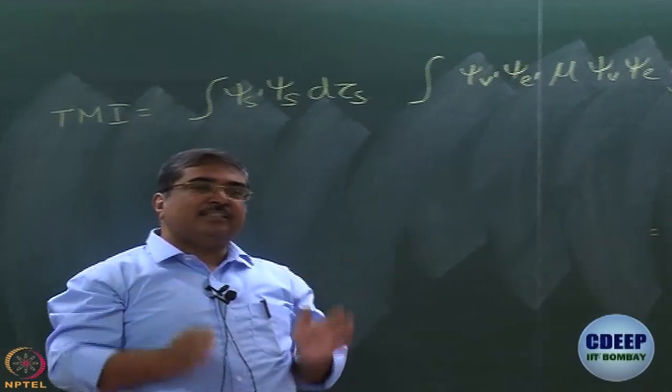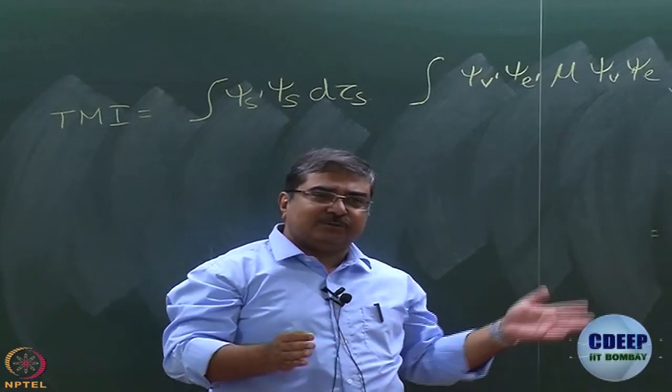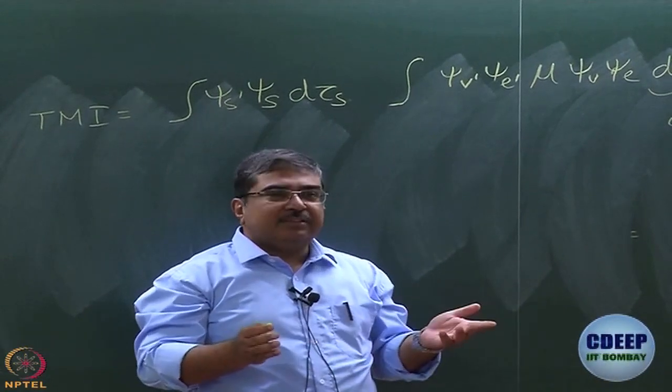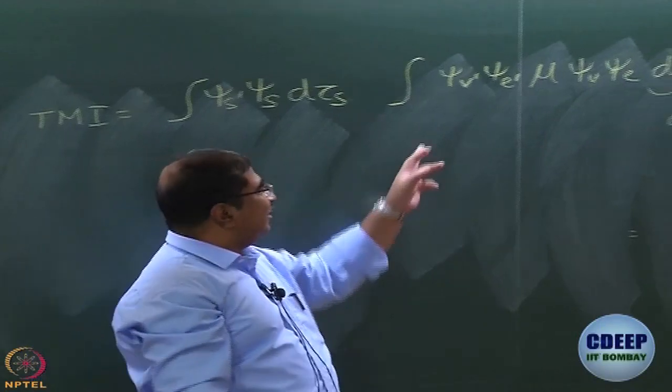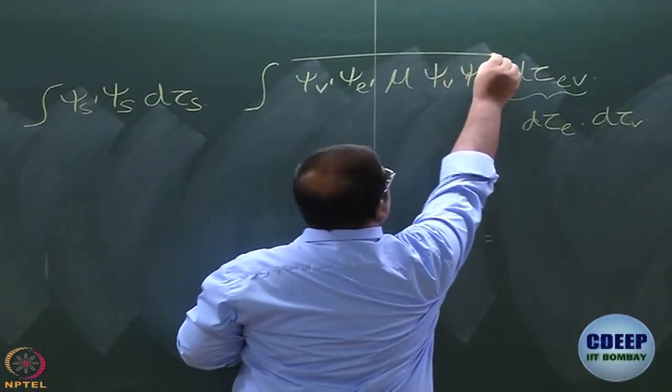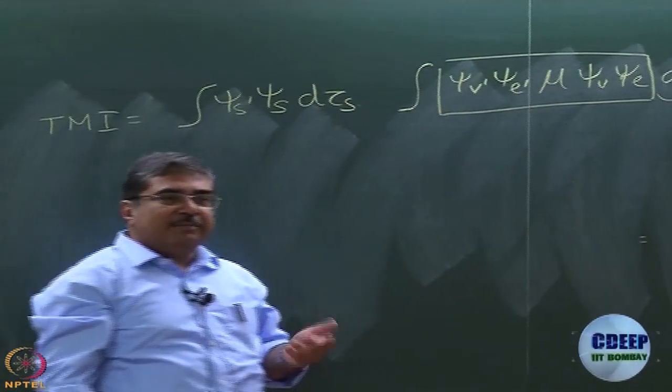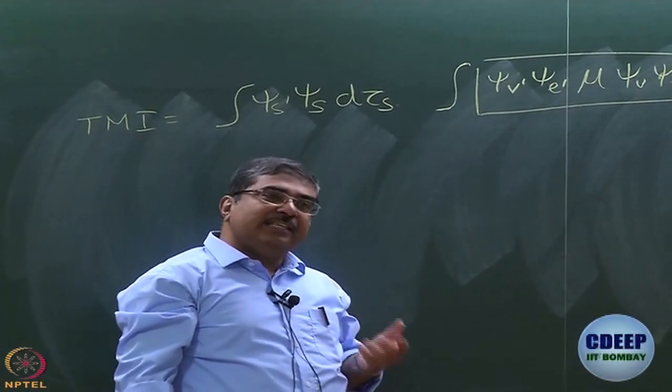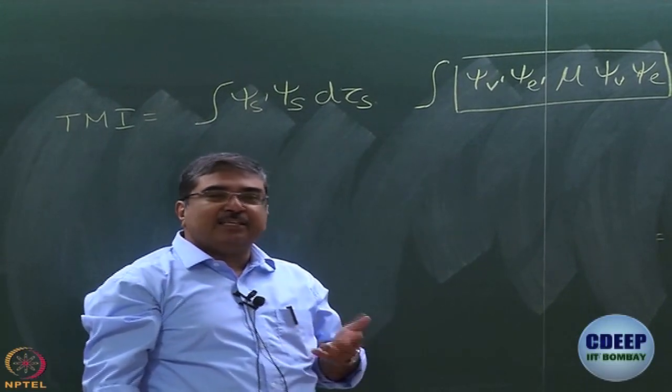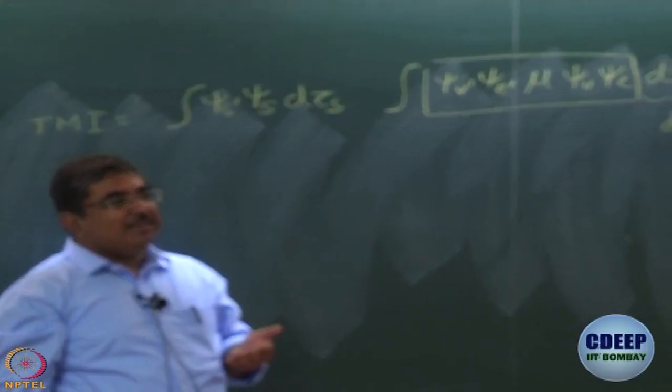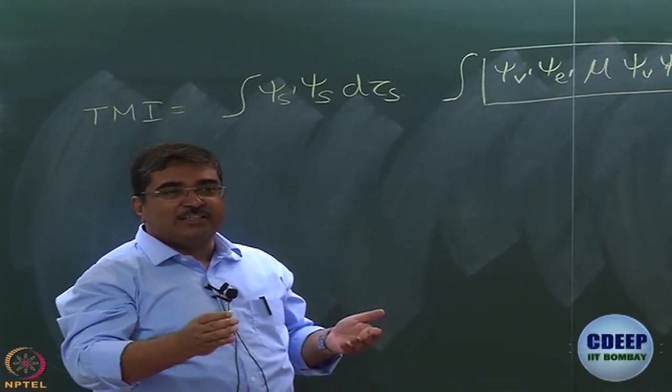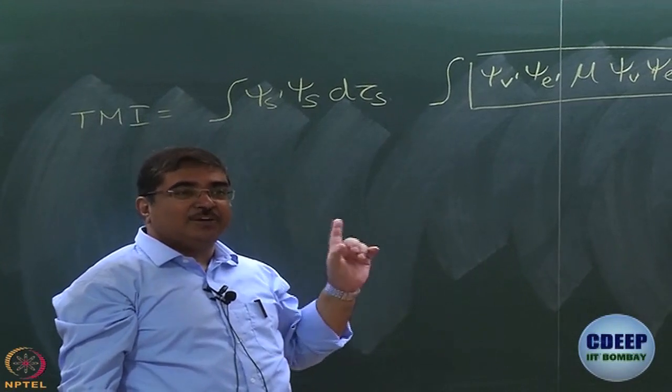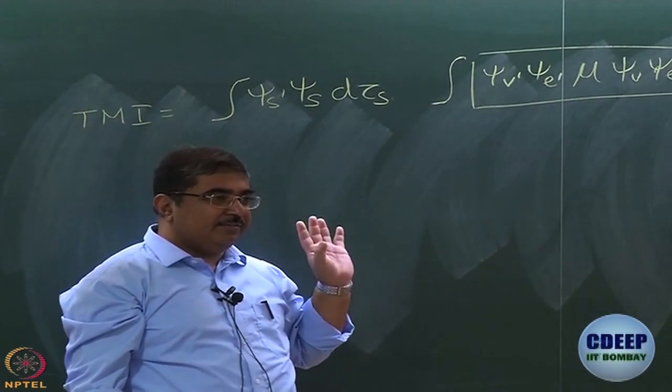So what you do is you write this transition moment integral as, you expand it as a Taylor series. You write it as a Taylor series and then the first term, suppose it is orbitally not allowed, first term will vanish. But in the second term you have to consider this entire thing. So transitions that are not dipole allowed can still be seen by using the quadrupole. But when does the quadrupole effect show up? Only when it is dipole forbidden. When the strong effect is not there then sometimes you see the weak effects. What we are talking about now is also a weak effect. You see it only when the strong effect is not there, that is a transition is orbitally forbidden.